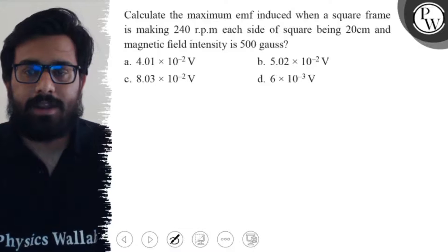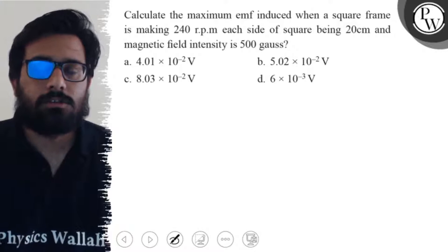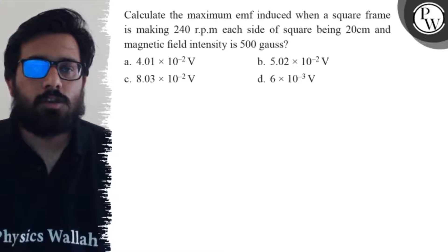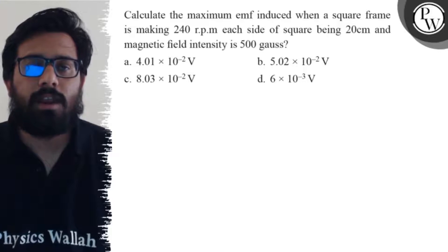each side of square being 20 centimeter and the magnetic field intensity is 500 gauss. Your first option is 4.01 × 10^-2 volt. Second option is 5.02 × 10^-2 volt. The third option is 8.03 × 10^-2 volt and fourth option is 6 × 10^-3 volt.